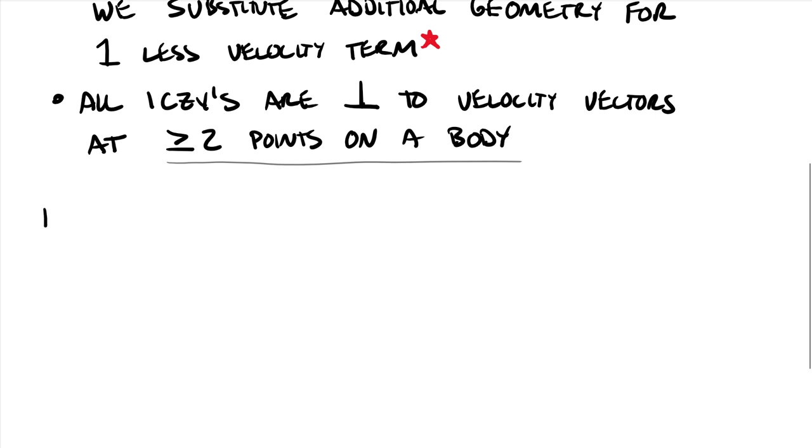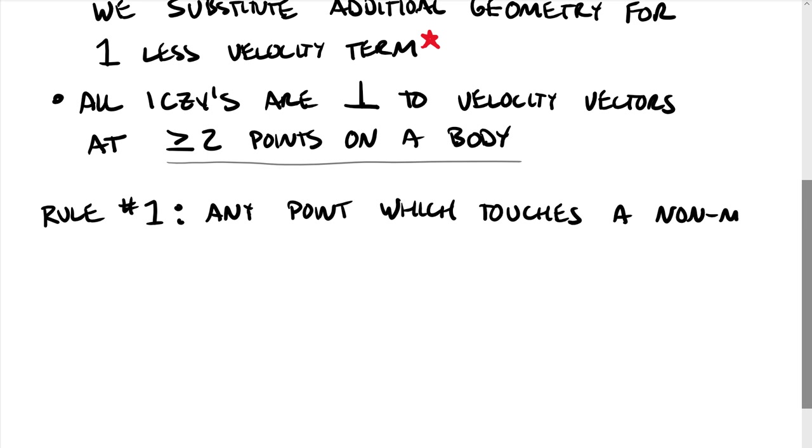All right, so rule number one. That is, that any point which touches a non-moving body and does not slip is an ICZV.